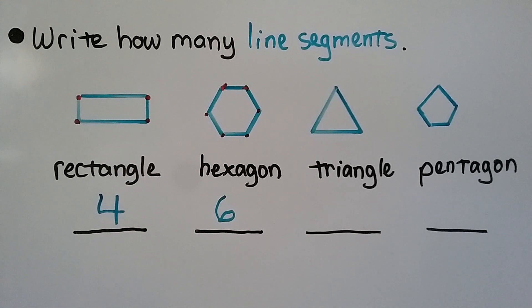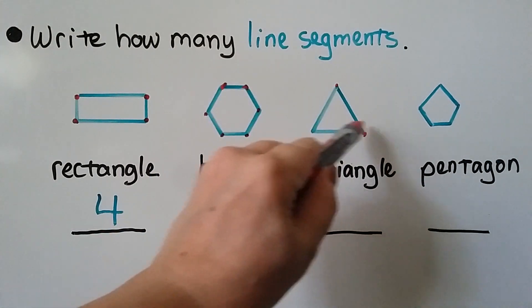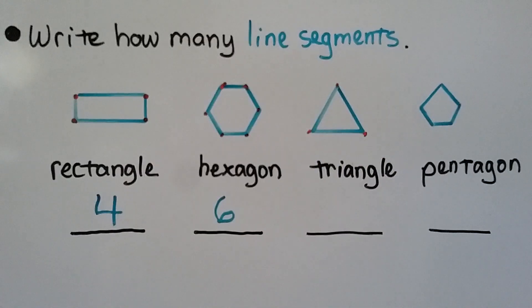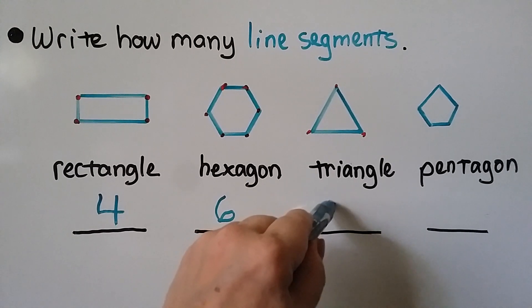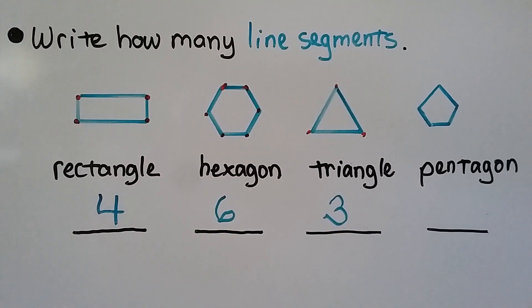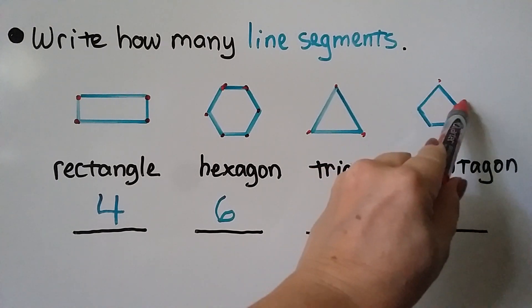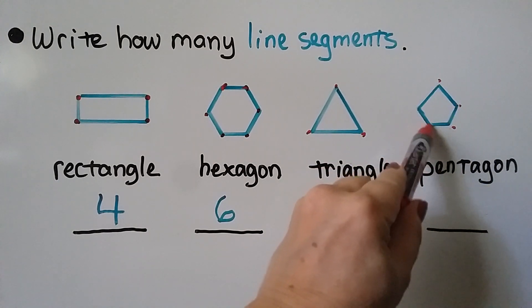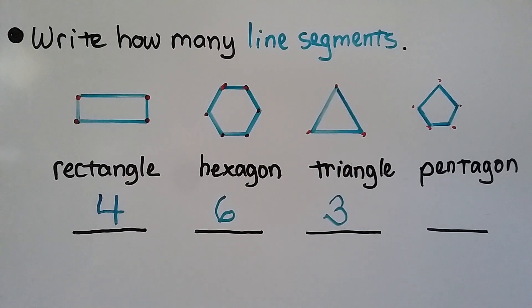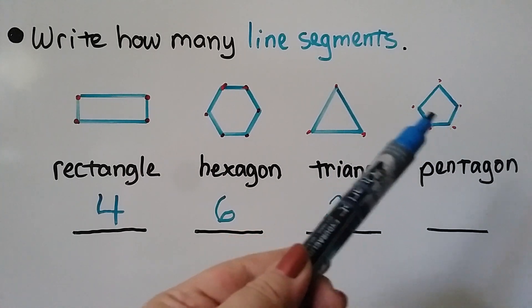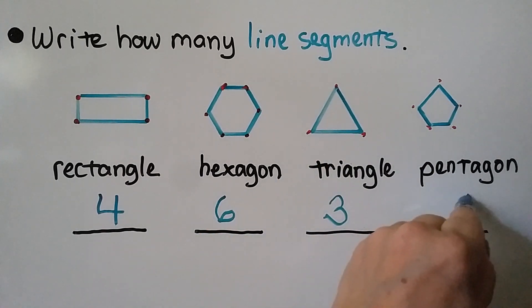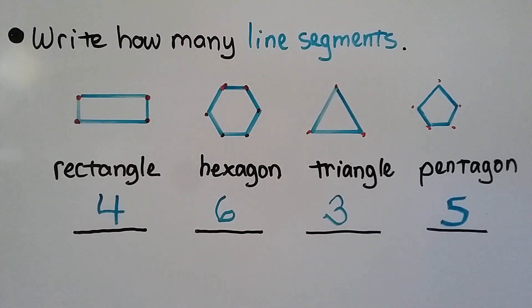What about this triangle? How many line segments are there? We can put an endpoint here, here, and here, and count the line segments: one, two, three line segments — there are three sides for a triangle. What about this pentagon? We can put an endpoint at each corner and count: one, two, three, four, five — a pentagon has five sides.